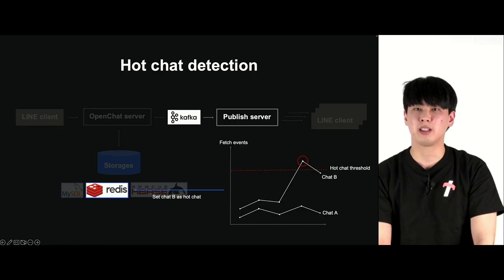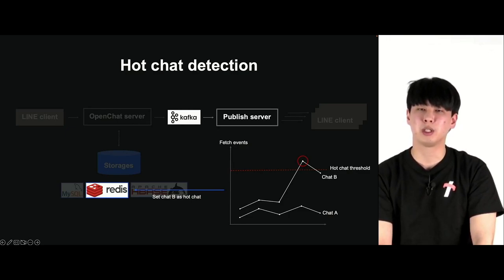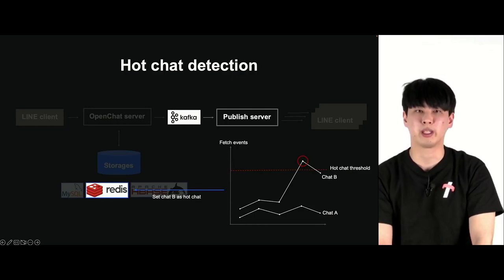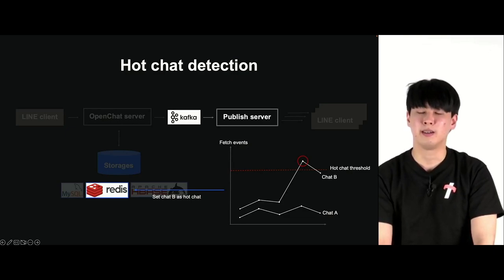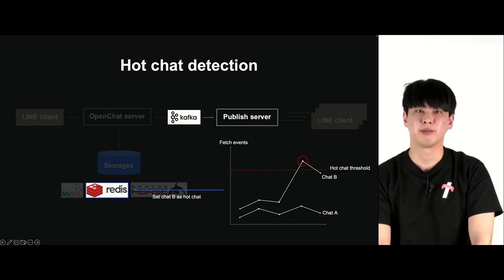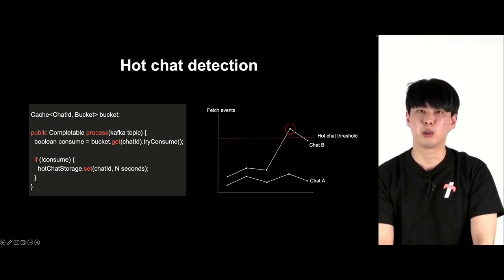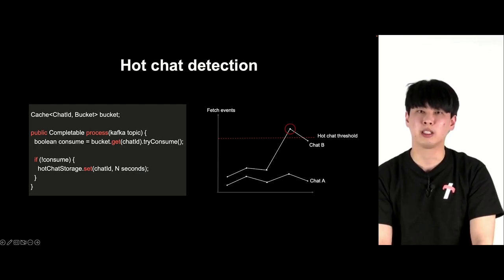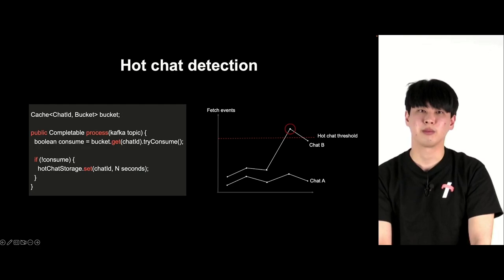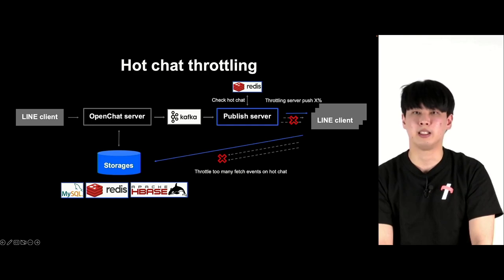We first need to detect hot chats and identify what methods to use for detection. We used Kafka and a bucket approach. Every time there is a request for the fetch event API, we send an event to Kafka and the publish server consumes it. In a single chat, we can see how many API requests have been made. If the number of API requests exceeds the threshold, we detect this as a hot chat and store it as hot chat in Redis. By chat ID, we record how many API requests have been made for fetch events, prepare a bucket, and record every fetch event API request. If it exceeds the threshold, it is stored as hot chat in Redis.